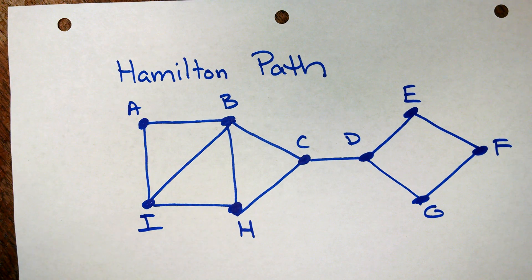Okay, so the first thing we're going to talk about is a Hamilton path. Now, a Hamilton path, we have the definition in class today. That's a path through a graph that goes through every vertex once and only once.